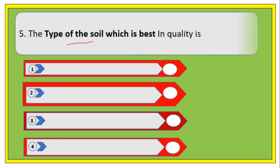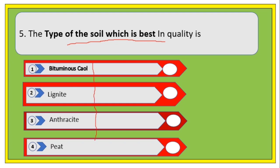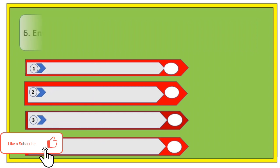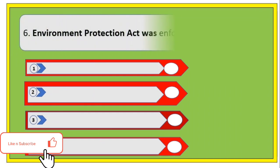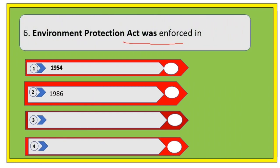Next question: the type of soil which is best in quality — options are bituminous coal, lignite, anthracite, and peat. The right answer is anthracite.